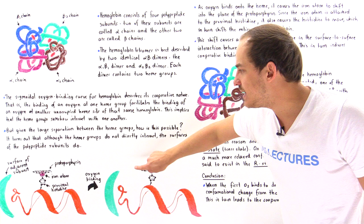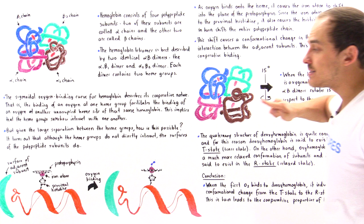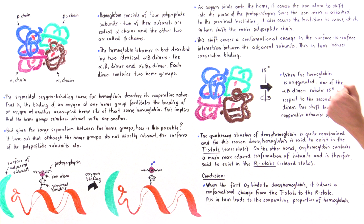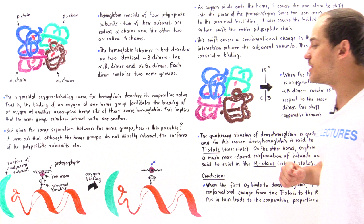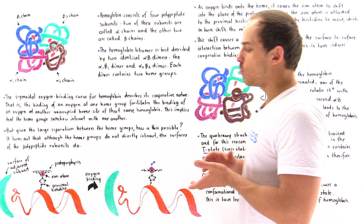To summarize: as oxygen binds onto the heme group, it decreases the size of the iron atom, pulling it into the plane of the protoporphyrin. Since the iron atom is attached to the proximal histidine, it pulls on that histidine, which in turn pulls and shifts the entire polypeptide chain. This shift causes a conformational change in the surface-to-surface interaction between the adjacent subunits, and this is precisely what leads to the cooperative behavior of the hemoglobin molecule.